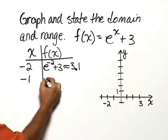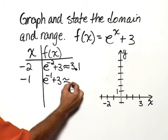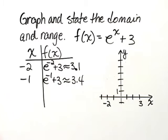Then for negative 1, it would be e raised to the negative 1 plus 3. And again, on a calculator, that's approximately 3.4.